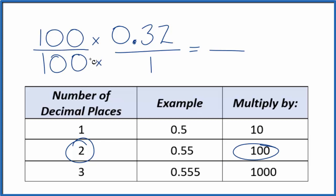100 divided by 100, that's just 1, so we're multiplying by 1. We're not changing the value, just the way it's represented. 100 times 0.32, that gives us 32. 100 times 1, that gives us 100.